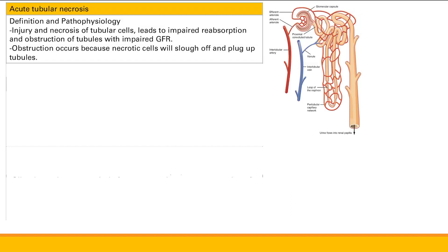Acute tubular necrosis — look at the name, you know the pathophysiology: injury and necrosis of the tubular cells. We get impaired reabsorption due to these injuries, and obstruction of tubules. Because of these dead cells in the tubes, they're going to slough off and cause plugging of the tubules. So if you have necrosis here, cells on the tubule wall die, they fall off, and cause plugging and obstruction.